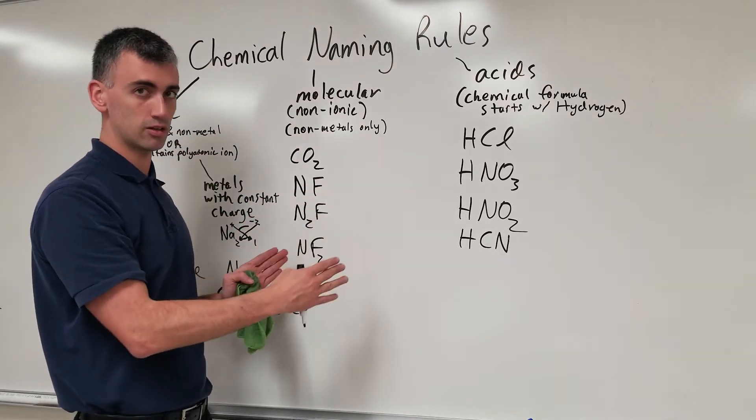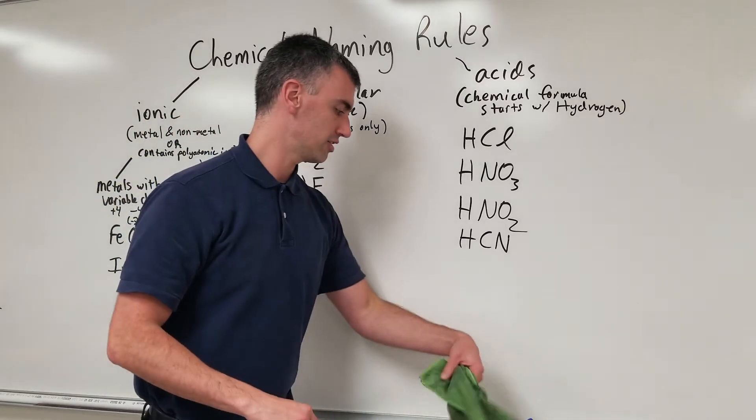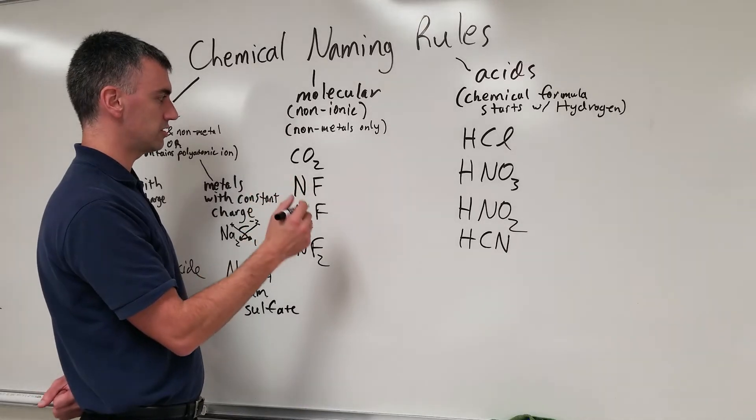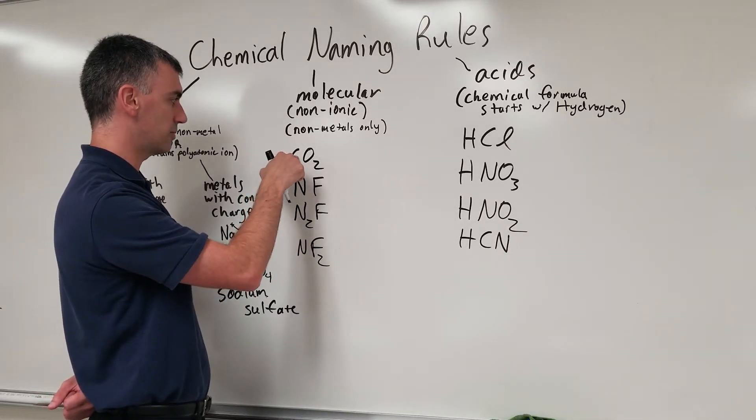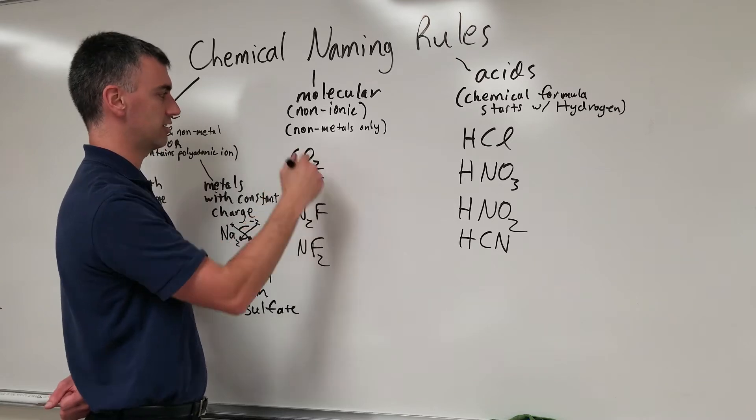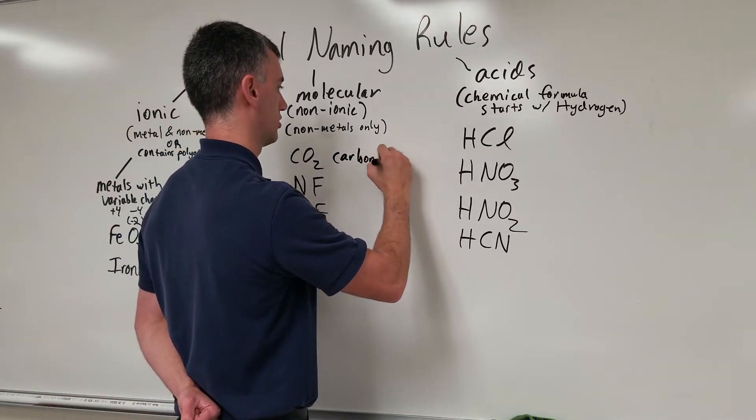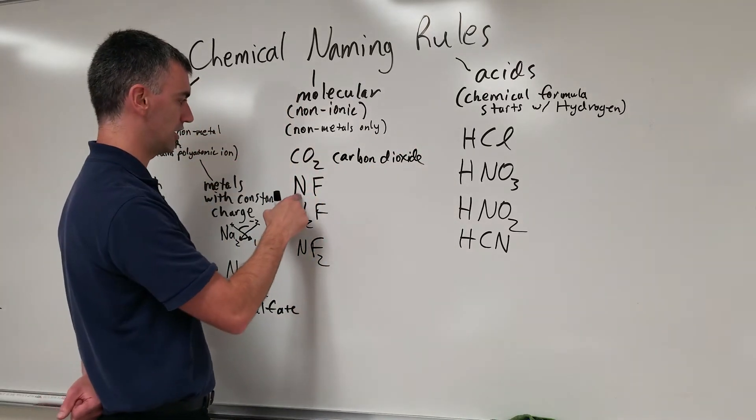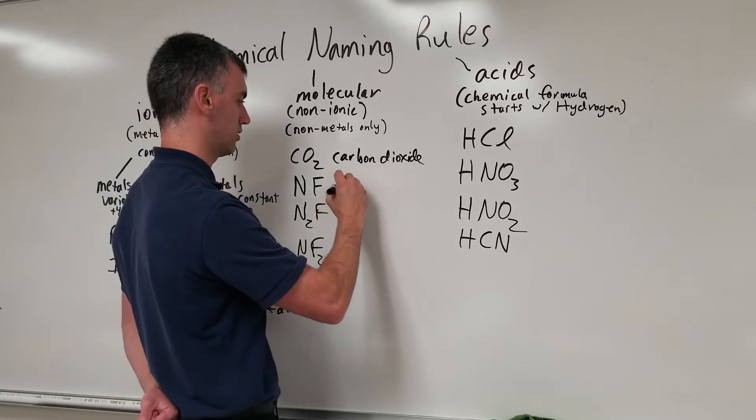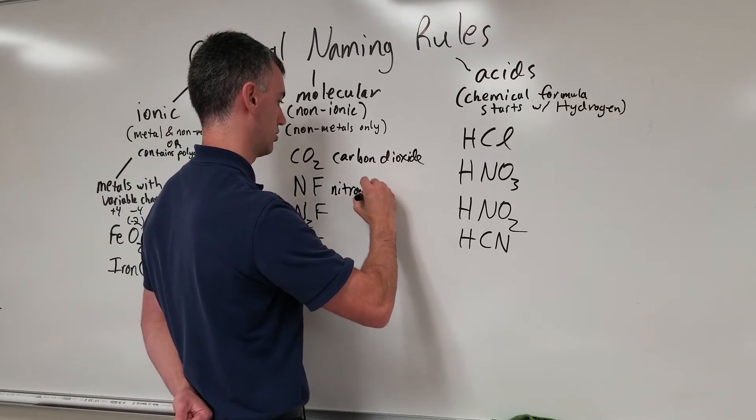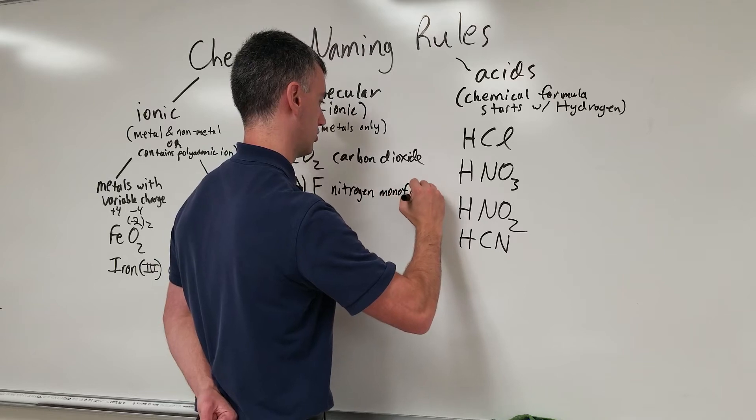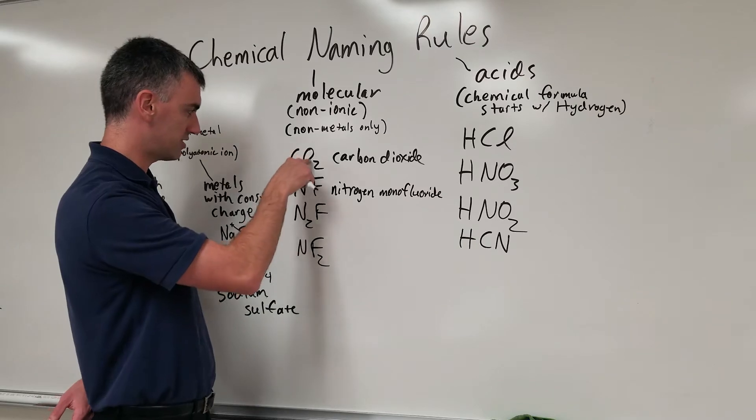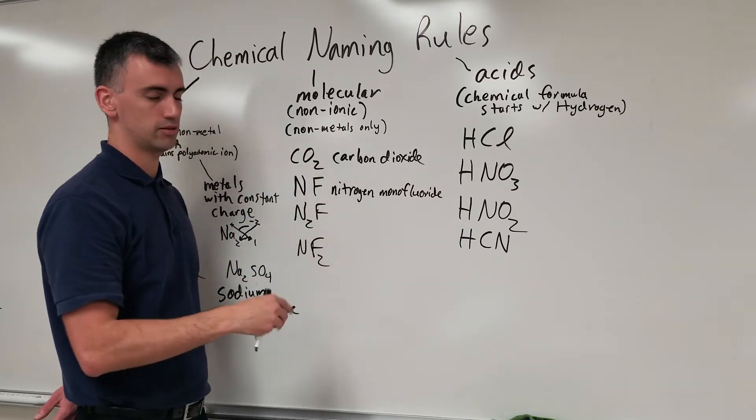Molecular compounds use the Greek prefixes to tell you what's there. What you do is you would look at this and you would say carbon dioxide, nitrogen monofluoride. Notice how all these second ones, it's iodine, fluoride, oxide, whatever. Because the negatively charged thing goes at the end, the positively charged thing goes at the beginning.